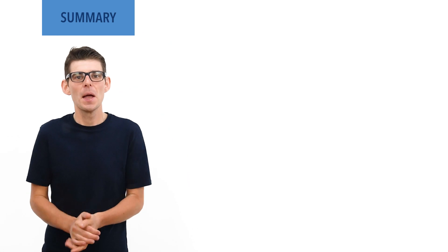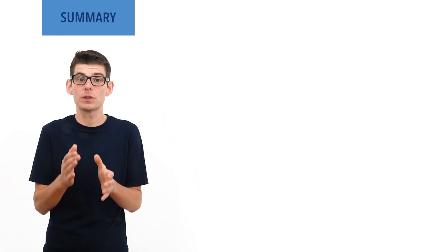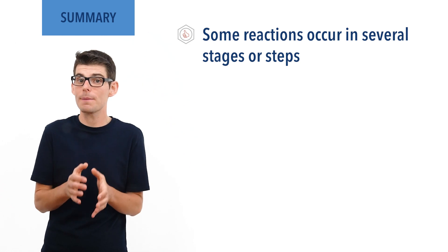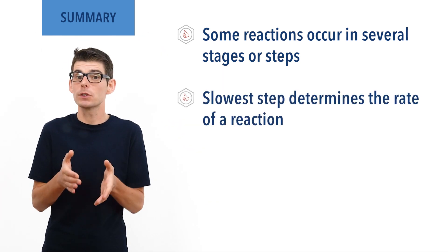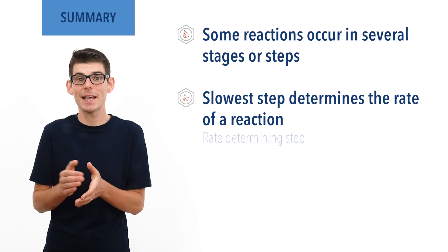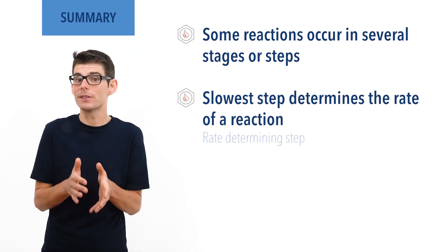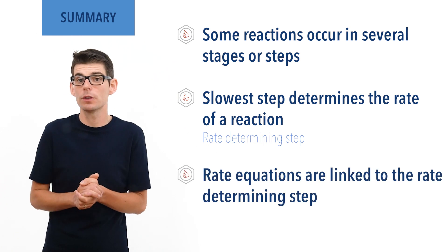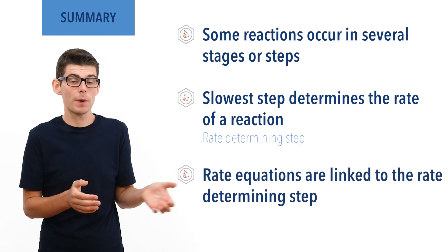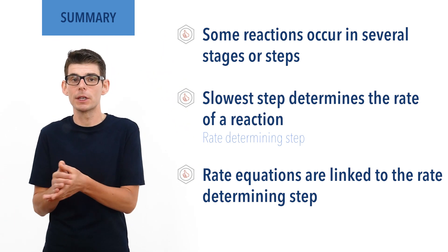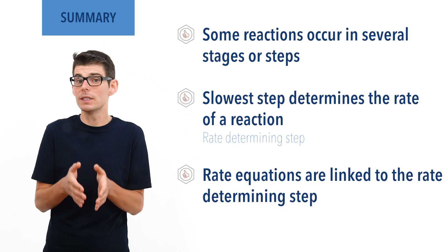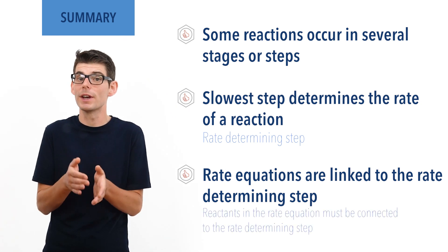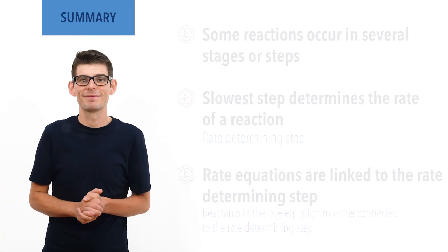To summarise: many reactions happen in several stages or steps. The slowest one of these steps will determine the rate of the reaction and is called the rate determining step. Rate equations are based around the rate determining step of a reaction and can be used, along with a balanced reaction equation, to help predict the mechanism that may be occurring. Reactants and species in the rate equation must be involved in the rate determining step. I hope you found this video useful — please check out other relevant videos in the links in the description below, and visit chemistrystudent.com for free notes and revision materials.